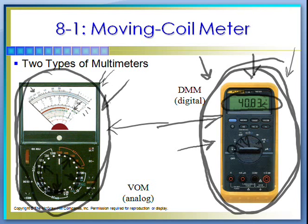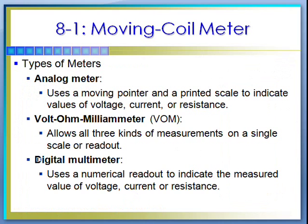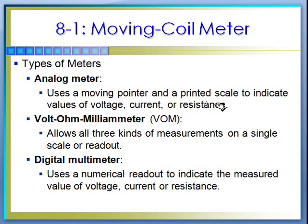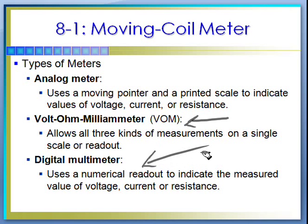An analog meter uses a moving pointer and a printed scale to indicate your voltages, values — voltage, current, resistance, whatever. A VOM allows all kinds of measurements on a single scale. A digital meter uses an analog-to-digital chip inside and gives you a numerical readout.